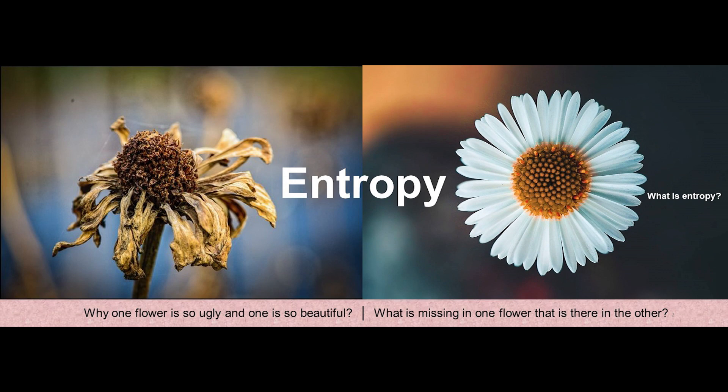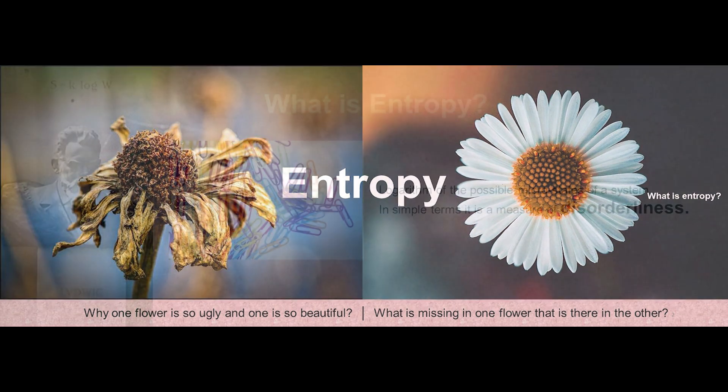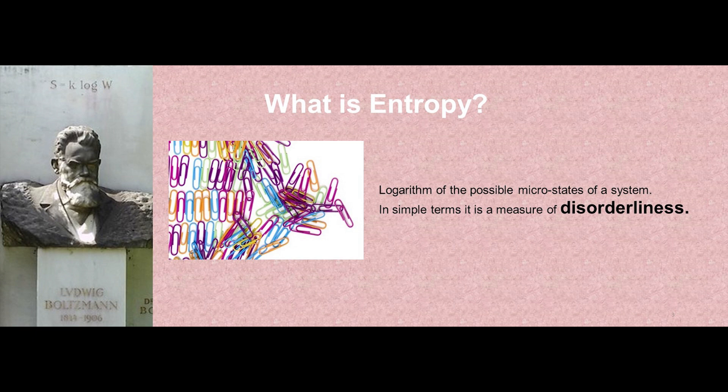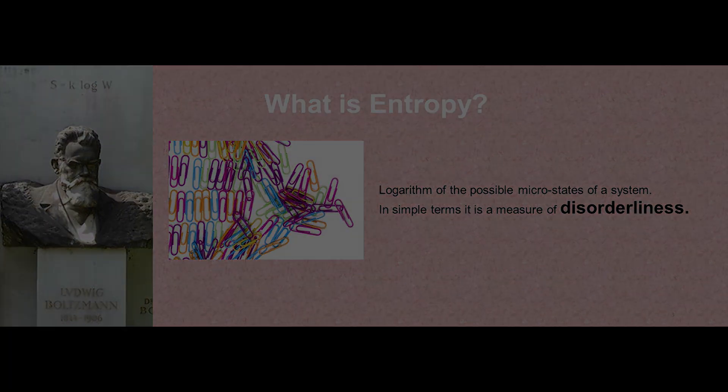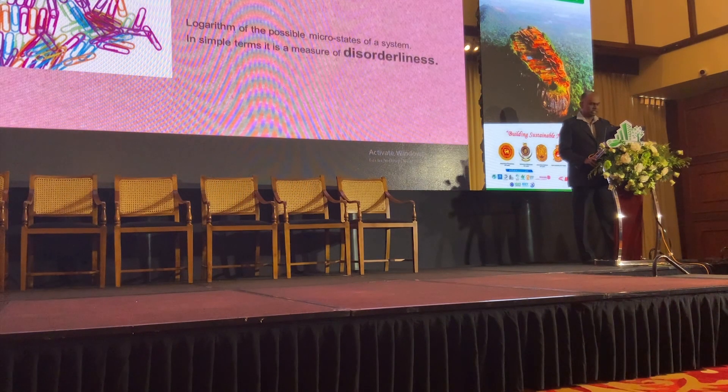But what is entropy? For those who have forgotten, entropy is a very easy concept in thermodynamics and statistical mechanics, but for our purposes entropy is just a measure of disorderliness — how disordered things are. We can see some paper clips here. To the left hand side they are very orderly, and as you go to the right hand side they are becoming more disorderly. So entropy is a measure of disorderliness.